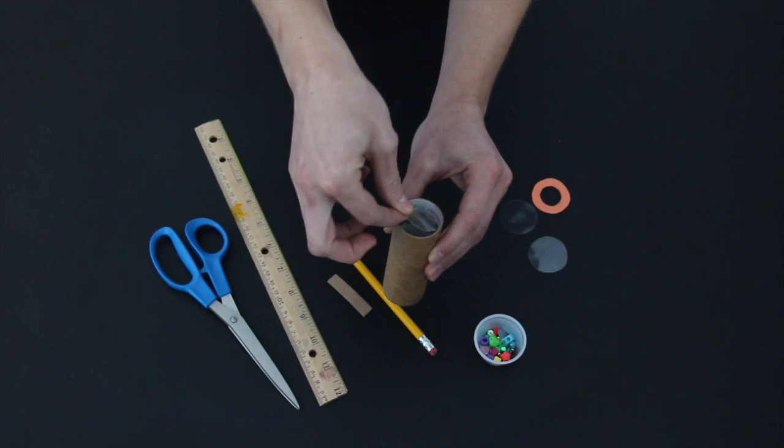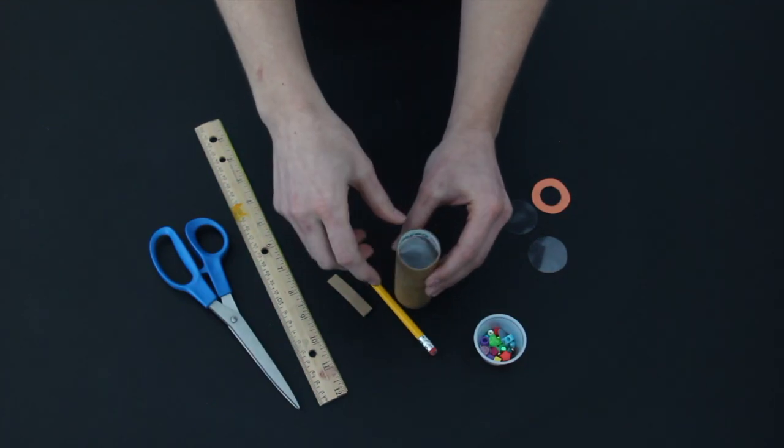Now put the small transparency circle into the A end so that it rests on the cardboard ring.